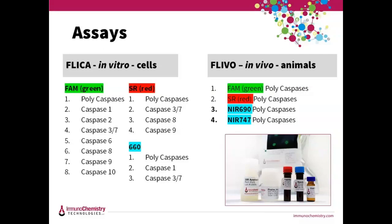For doing cellular analysis, we have many different reagents that you can use. The FLICA reagents are available in red and green and NIR-660. The FLIVO reagents for use in animals are available in green and red and near-infrared at 690 as well as 747.